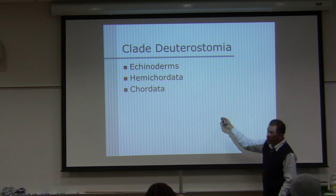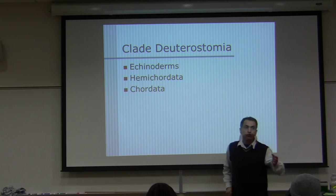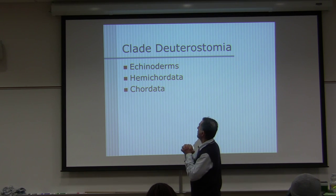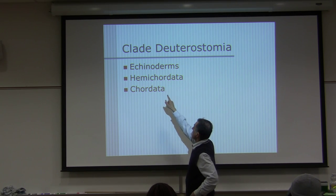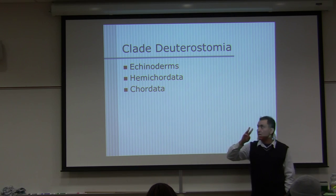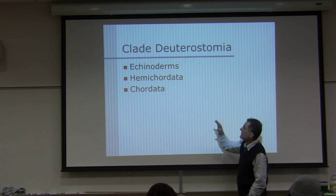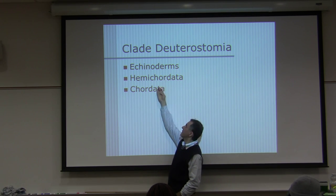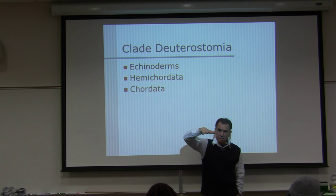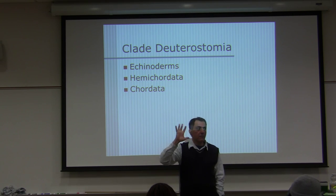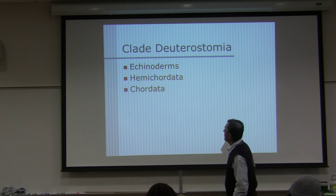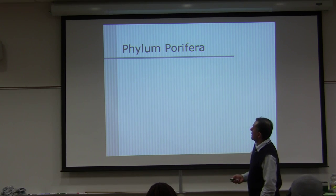Clade Deuterostomia — which you already know — means anus first in development. Echinodermata, hemichordata, and chordata are the three phyla. Echinodermata — the starfish — will be for exam five, and the other two will be for the final exam.